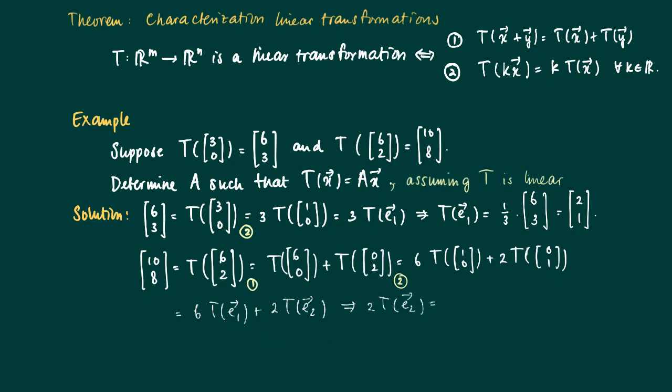Now T of E2 is here, which means that 2 T of E2 equals [10,8] minus 6 times T of E1. And we know what T of E1 is because we just calculated it.